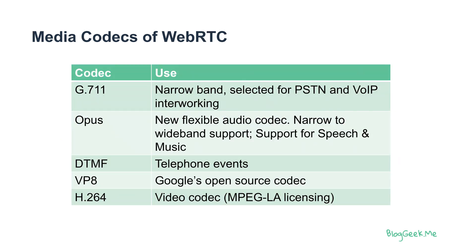In WebRTC we have different media codecs. The mandatory ones to implement are G.711 and Opus for audio. G.711 is narrowband, selected because of PSTN and Voice over IP interoperability. Opus is a very flexible audio codec that provides anywhere from narrow to wideband audio support. We also have DTMF as a kind of codec, as well as VP8 and H.264 — two video codecs supported in WebRTC. VP8 is Google's open source codec, whereas H.264 comes with MPEG-LA licensing and requires IPR — paying patents for using it.